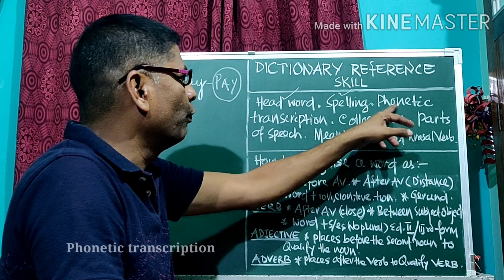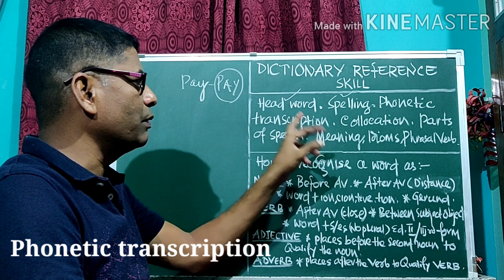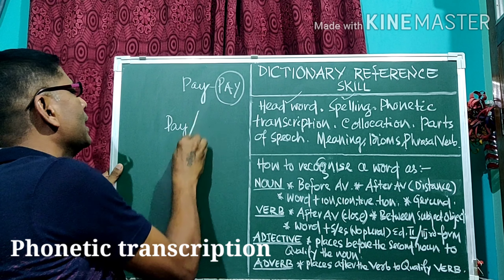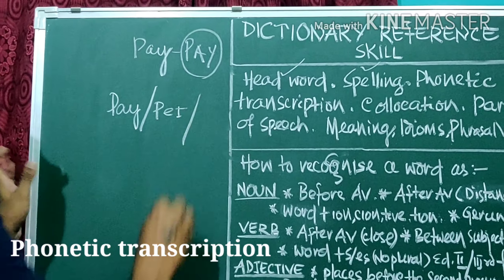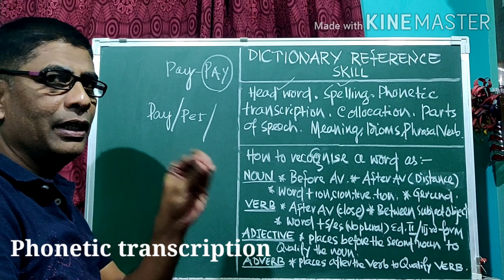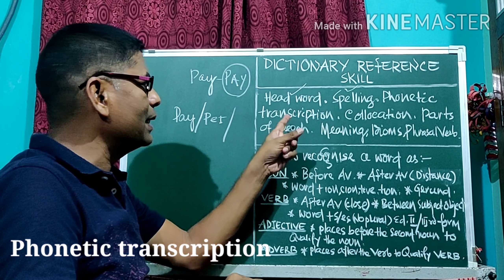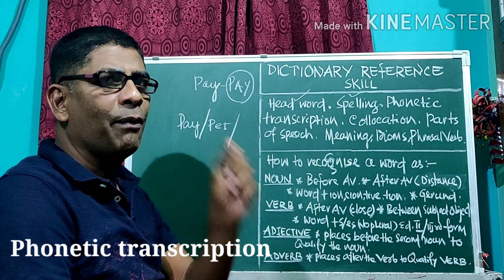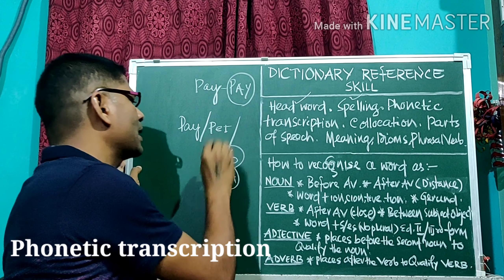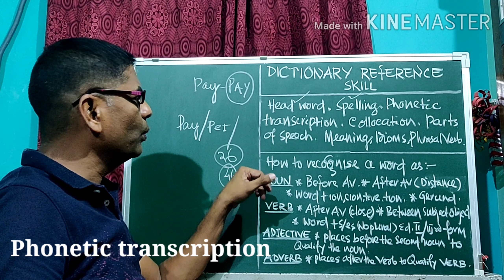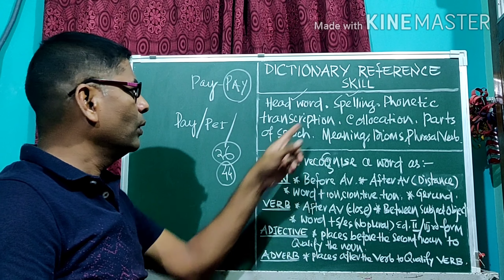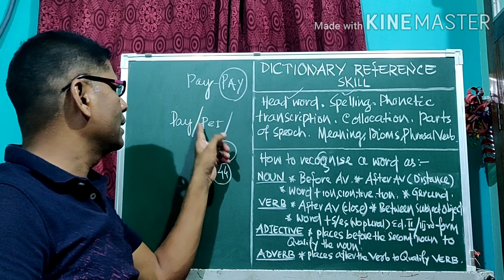Number three is phonetic transcription. Phonetic transcription is very important to pronounce a word correctly. For example, for 'pay', you can get the phonetic transcription in the dictionary so that we can pronounce the word exactly — the standard pronunciation. In English we have 26 alphabets but 44 basic sounds, symbolized into 44 phonemes, so that we can read and pronounce words exactly.